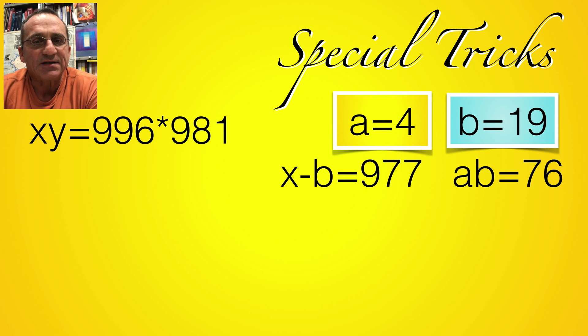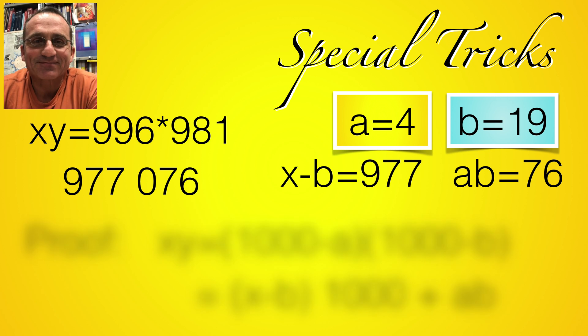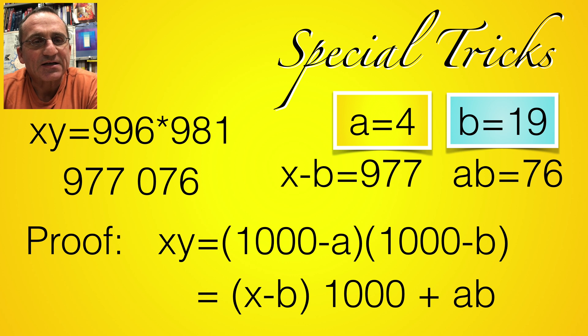And now we have already the product, the product is 977,076, pretty cool. So the proof is pretty simple, you just foil out 1000 minus a times 1000 minus b, and you'll see what you get.